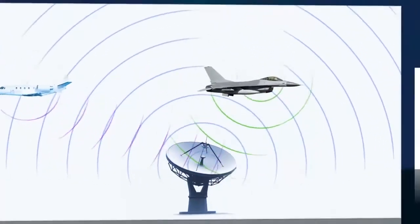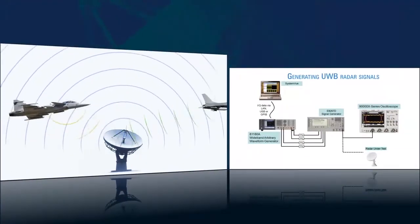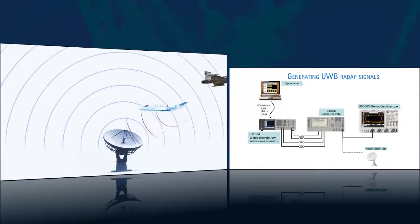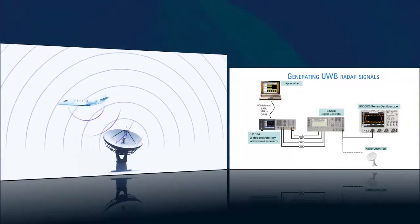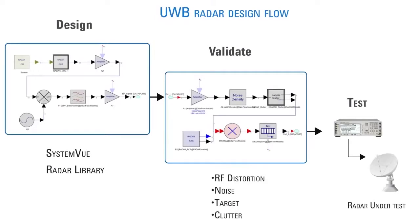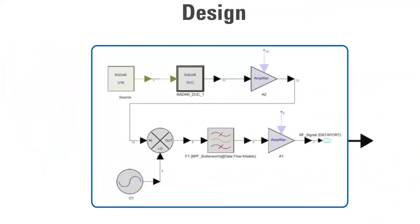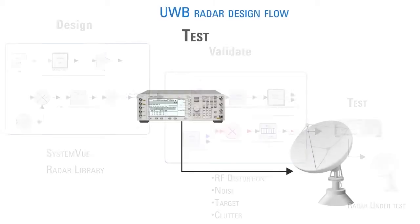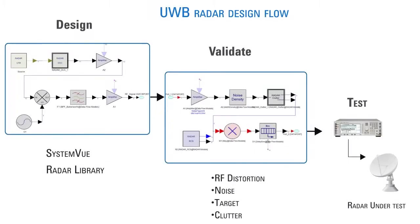To dramatically lower cost, Agilent SystemVue can be used with Agilent test equipment to model many of these same scenarios. SystemVue is more than just waveform creation software — it is an electronic system-level design platform that allows you to first design a complete radar system that includes both baseband DSP and RF content, validate the system under real-world conditions, and then create waveforms for testing. SystemVue is at the center of a solution that takes you from design through validation and test.